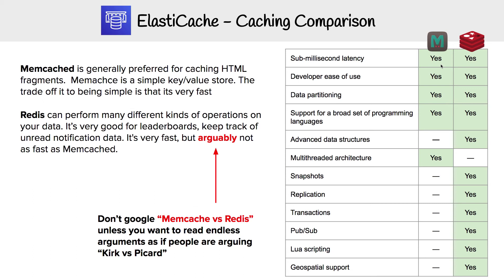Generally, for the exam, Memcached is technically considered faster for HTML fragments. But it doesn't really matter, because on the exam they're not going to ask you to choose between Memcached and Redis — but you do need to know the difference.